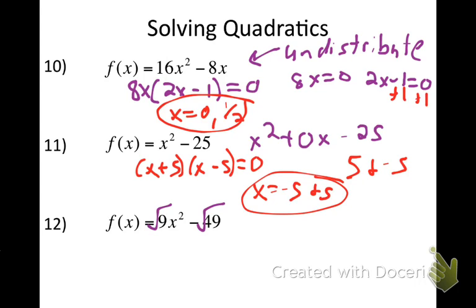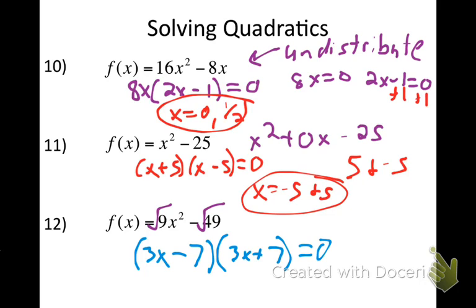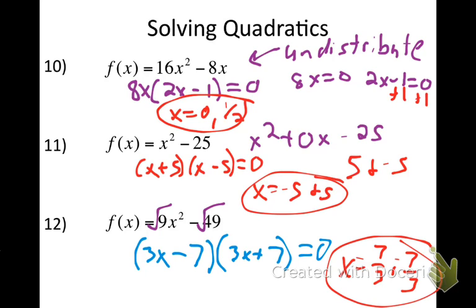Number 12 is the hardest one — it's a difference of squares but there's a number in front of x squared. Think of it using square roots. Square root of 9 is 3, square root of 49 is 7. So I get (3x-7)(3x+7). Setting each equal to zero, I get x equals 7/3 and x equals negative 7/3.